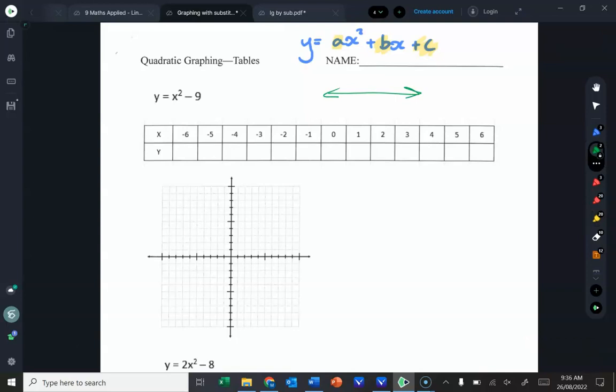So we've got an a value, which will control how tight the curve is, or whether it's a smiley or a sad face. We've got a b value, which will shift it left and right. And we've got a c value, which will shift it up and down. So this is far more multidimensional, if you like, than what the linear is.